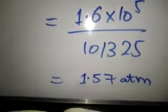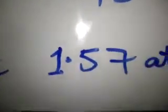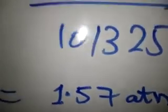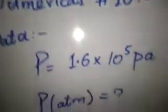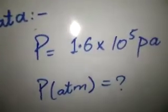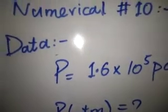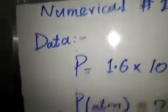The answer is 1.57 atm. What is atmospheric pressure in atm? The atm is 1.57.